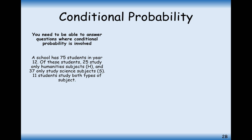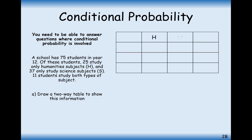Let's have a go at a question. A score of 75 students in year 12: 25 only study humanities subjects H, 37 only study science subjects S, and 11 students study both types of subjects. Draw a two-way table for this information — we're going to have probability of studying humanities or not, probability of studying science or not, and totals for both.